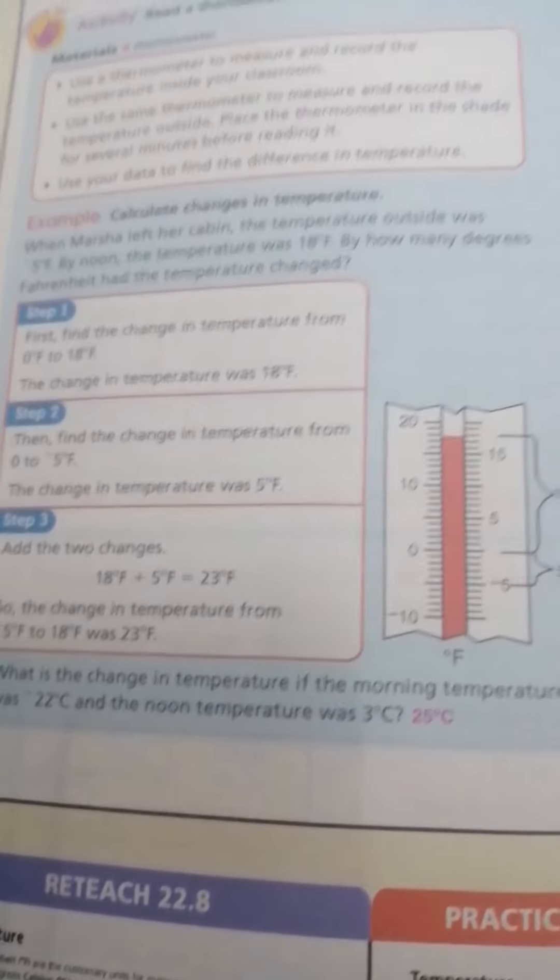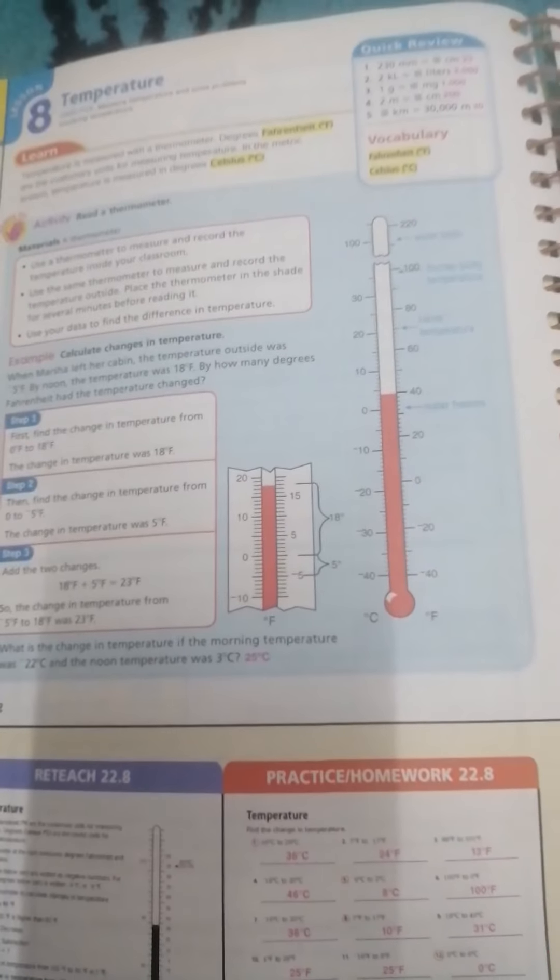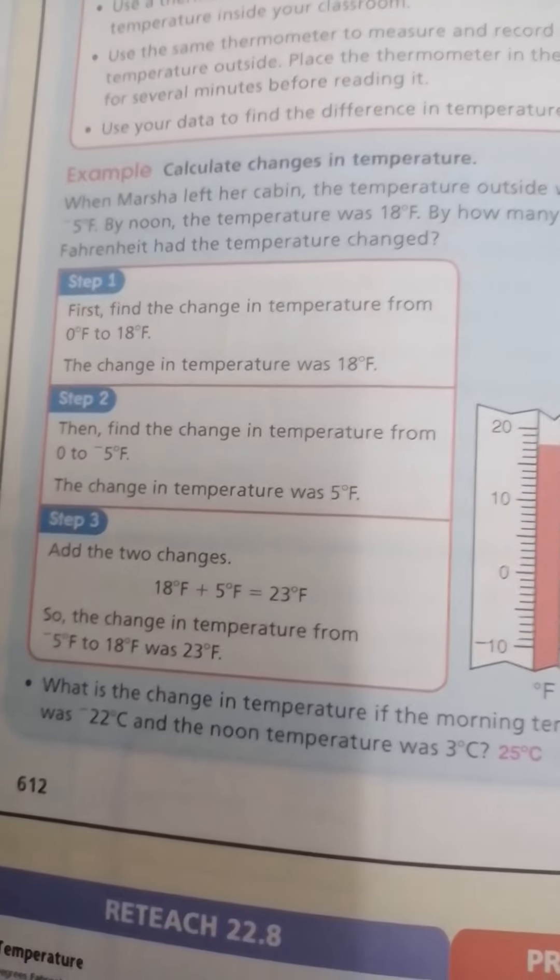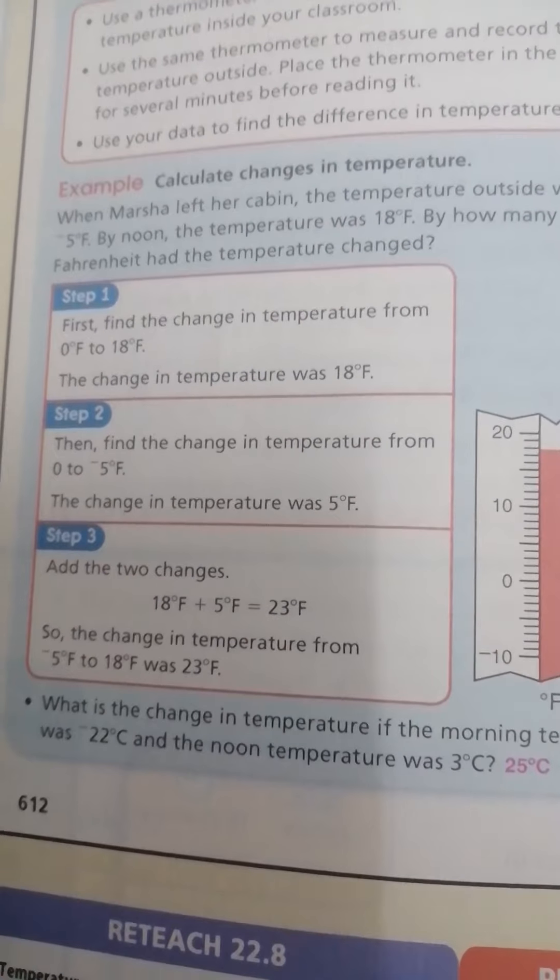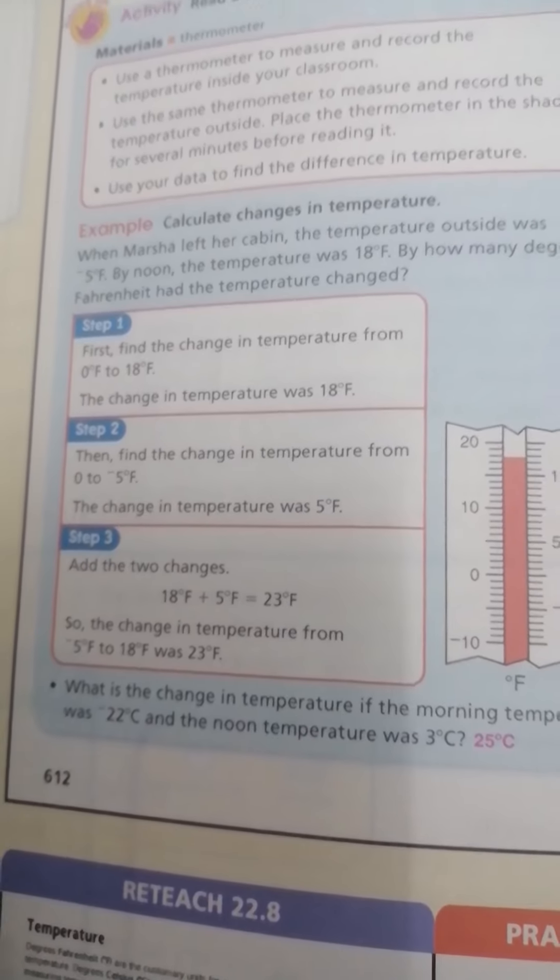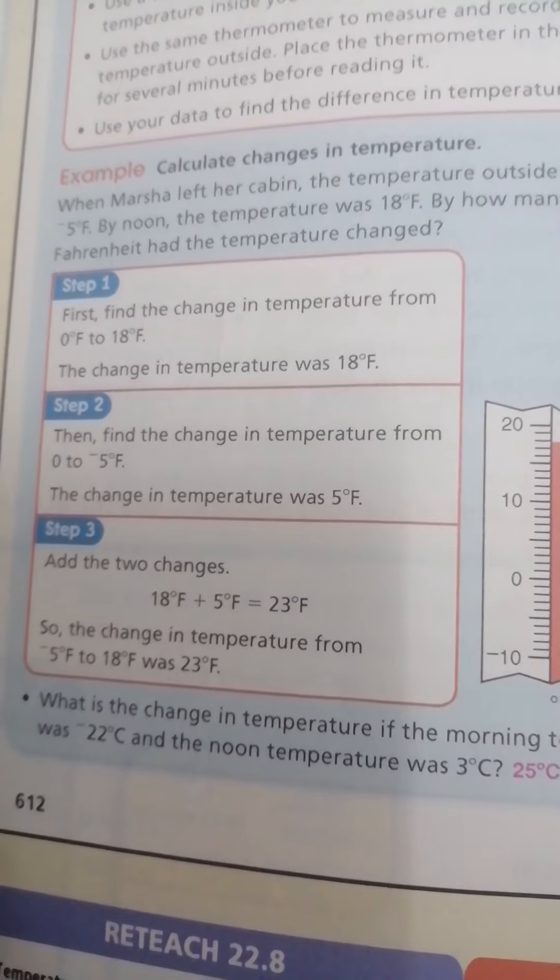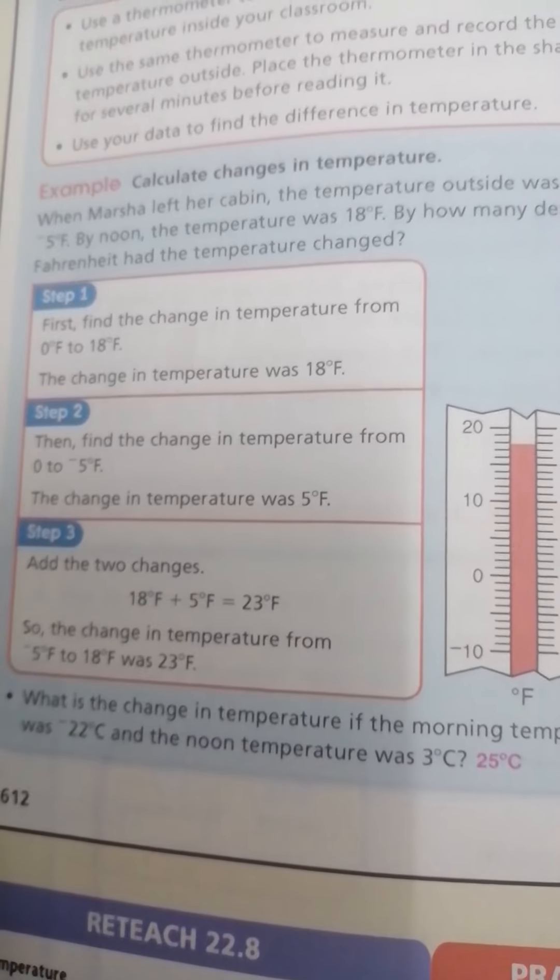Okay, look at here. First, find the change in temperature from 0 to 18. Because we start from less to greatest, we will make addition. 0 plus 18 equals 18 Fahrenheit.